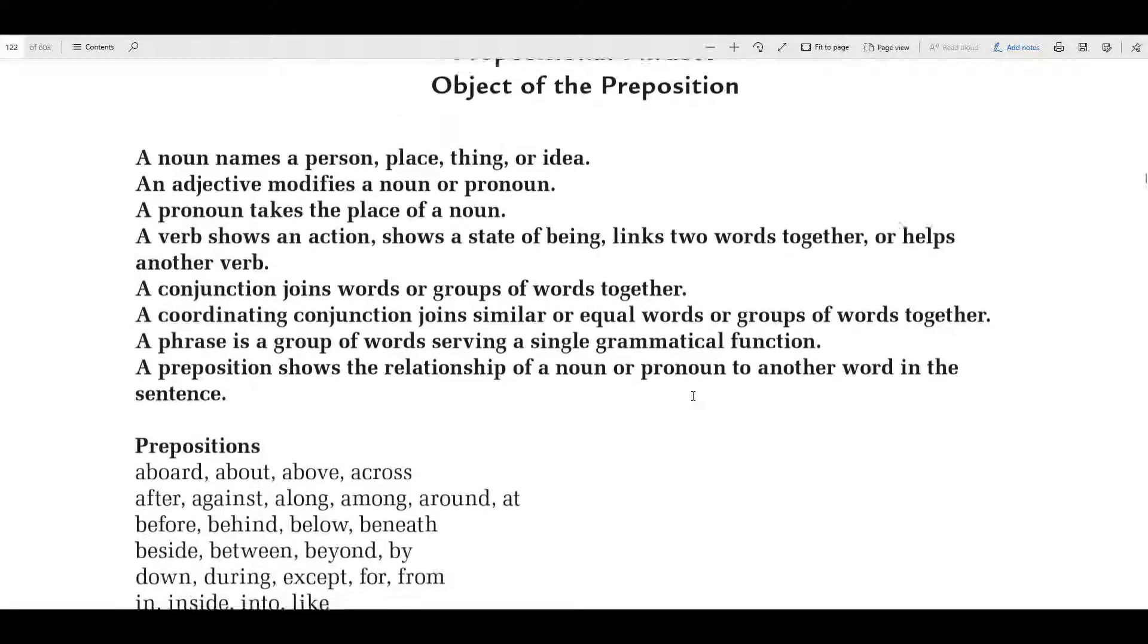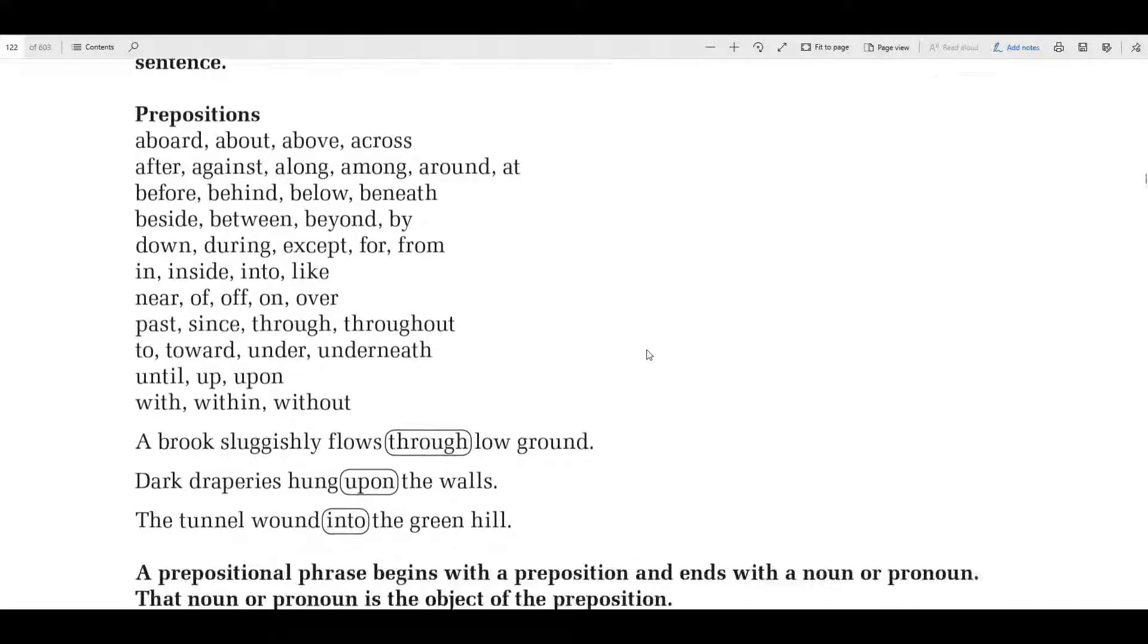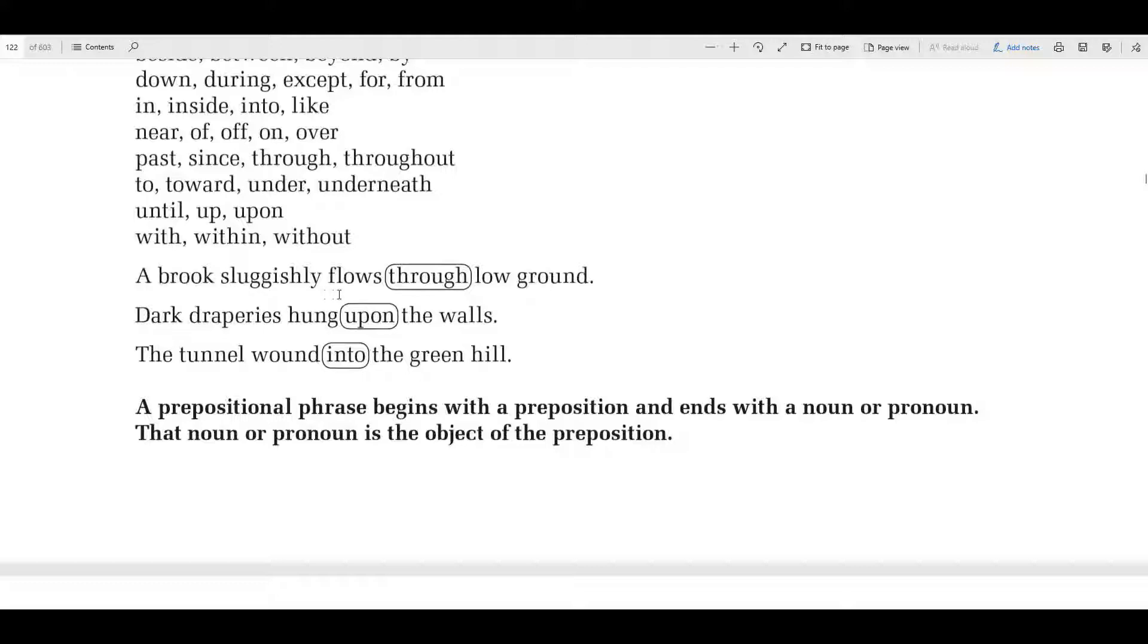Here's a list of prepositions, one we had yesterday. Again, you don't have to have them memorized, but there you go. So, a brook sluggishly flows through, dark draperies hung upon the, the tunnel wound into. Remember, these are prepositions. These show the relationships between the subjects and something else in the sentence.